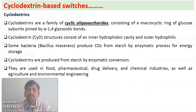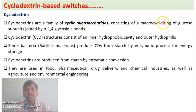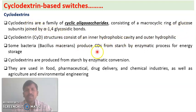Welcome to the session. In this session I am going to talk about cyclodextrin-based switches. Cyclodextrins are cyclic sugars, cyclic oligosaccharides. They consist of a macrocyclic ring made up of glucose subunits. Cyclodextrins having 6 glucose subunits are alpha-cyclodextrins, 7 glucose subunits are beta-cyclodextrins, and 8 glucose subunits are called gamma-cyclodextrins. The glucose subunits are joined by alpha-1,4 glycosidic bonds.